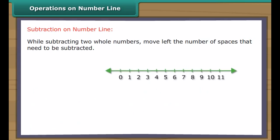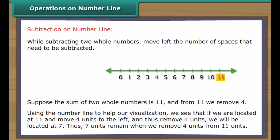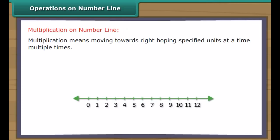While subtracting two whole numbers, move left the number of spaces that need to be subtracted. Suppose the sum of two whole numbers is eleven, and from eleven we remove four. Using the number line to help our visualization, we see that if we are located at eleven and move four units to the left, and thus remove four units, we will be located at seven. Thus, seven units remain when we remove four units from eleven units.